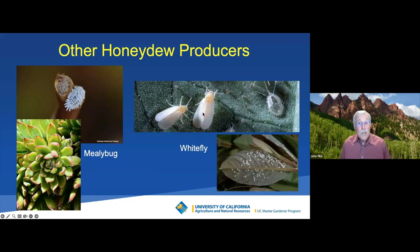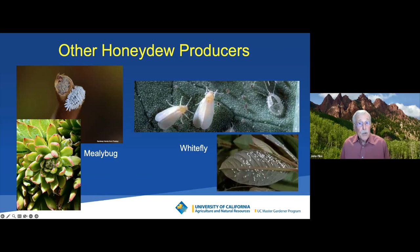Another one is the whitefly. These are adult whiteflies — they are not actually flies, they are true bugs, like aphids, mealybugs, and scales. The nymphs are often found on the underside of leaves. These guys suck juices out of the plant, produce honeydew, and are farmed by ants — all the same problems — and they're very difficult to deal with. You can wash them off and use oils and soaps, but you'll kill the nymphs without killing the adults, and they'll come right back.